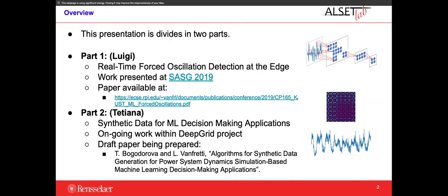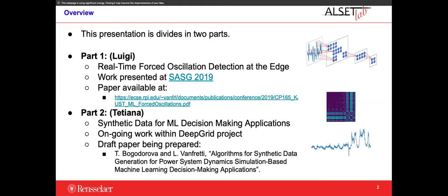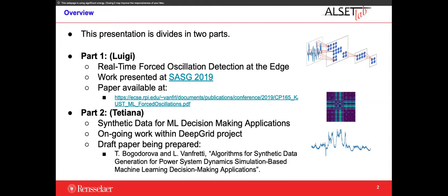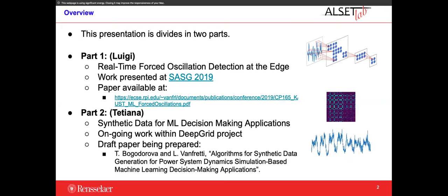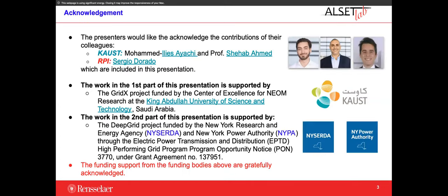The first part is going to be me, talking about real-time forced oscillation detection at the edge — work done over the last year, mostly during the summer in Saudi Arabia. The paper is available at the provided link. This previous work was funded by the Grid X project funded by the King Abdullah University of Science and Technology in Saudi Arabia. I want to thank my colleagues in CAOS, Mohamed Ilyasayachi and Professor Shehawa Ahmed, and my student Sergio.